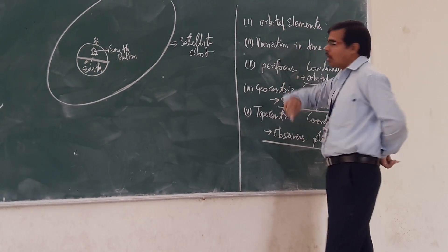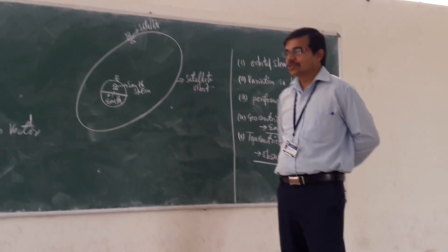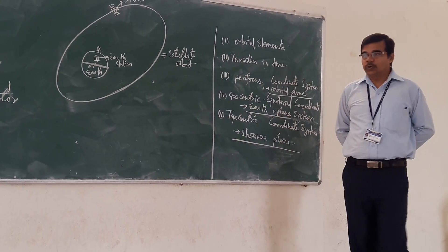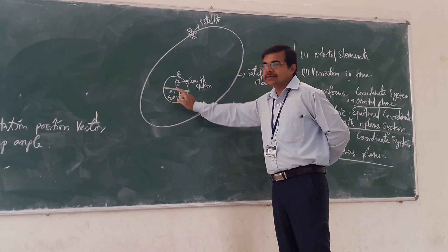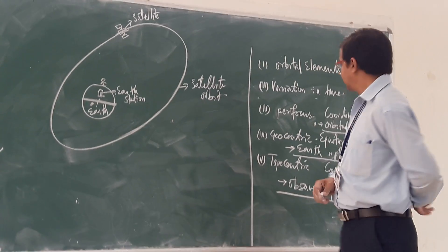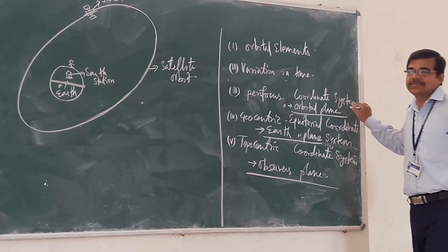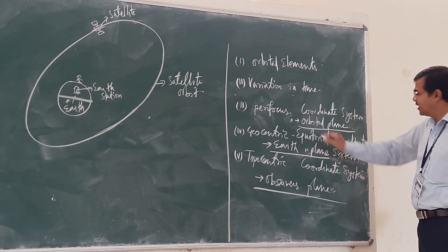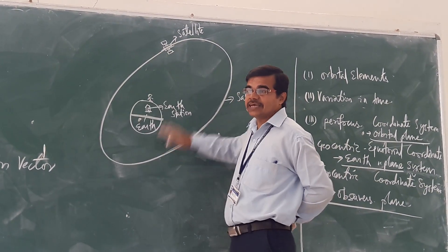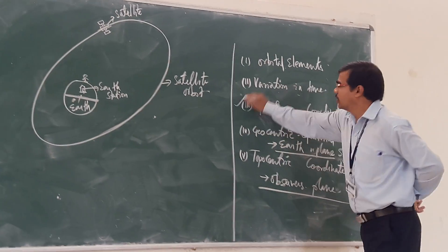The first parameter is the orbital element. We have covered different orbital elements earlier. The second is variation in time — with respect to time, as the orbit changes, the satellite position also changes, and we have to consider this parameter. The third is the Perifocus coordinate system, which means it is your orbital plane. Whatever satellite orbit you have, that orbital plane is your third parameter.